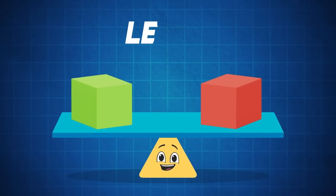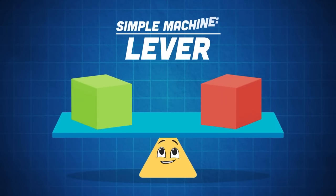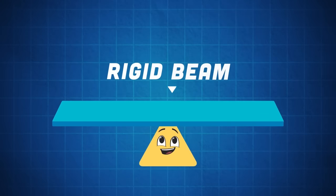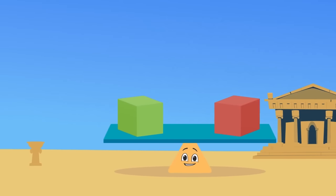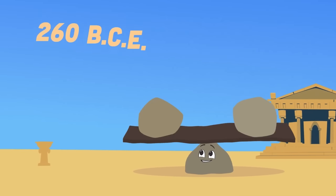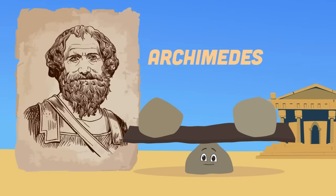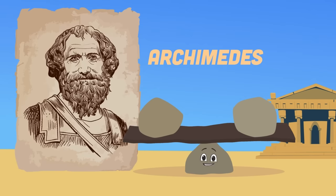This is a lever. It's a simple machine made of a fulcrum and a rigid beam. The lever was first brought forth in 260 BCE by Archimedes, the Greek mathematician. This simple machine is made of a rigid beam and a fulcrum.